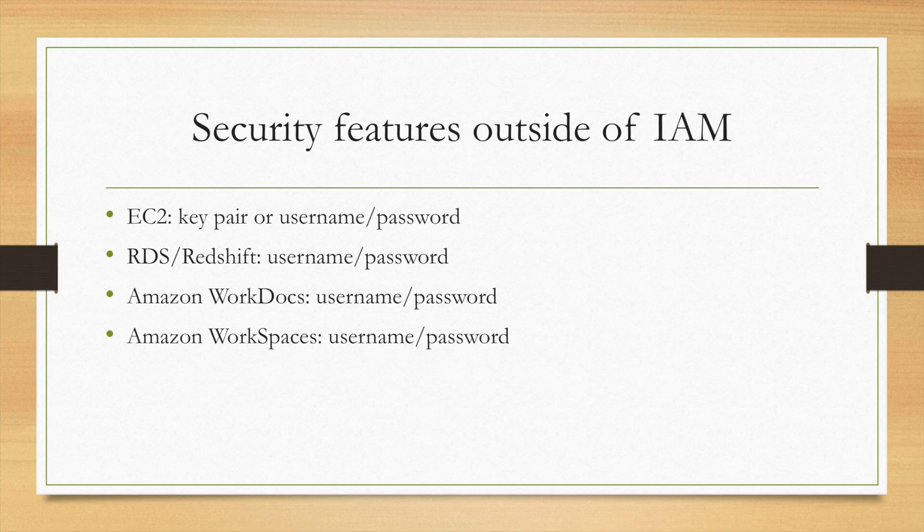Here are some examples of security features outside IAM. EC2 uses a key pair or username and password. For databases like RDS and Redshift, they use username and password. Others, like WorkDocs and WorkSpaces, also use username and password. There are different security features in AWS.